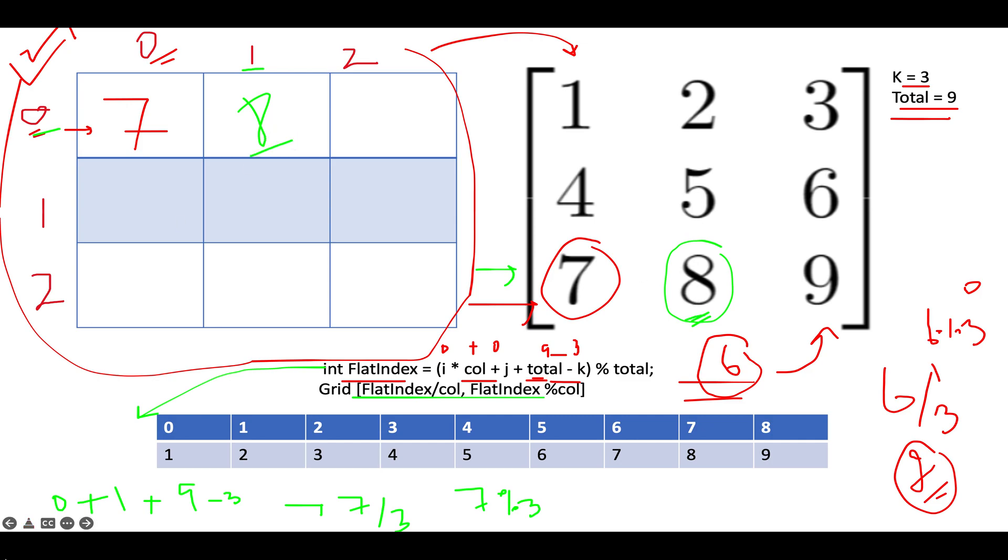Let's proceed ahead. Next we see is 0, 2. And let's apply this flat index formula. So this will give you 0 into 3 is 0 plus 2. So 2 plus 9 minus 6. 9 minus 3 is 6. So 2 plus 6 is 8. So you get flat index as 8.